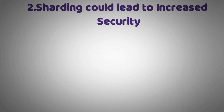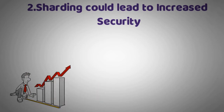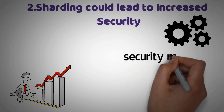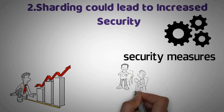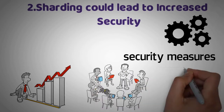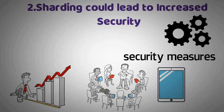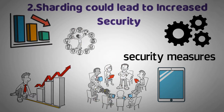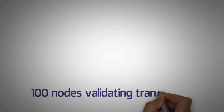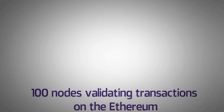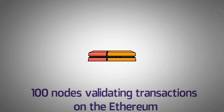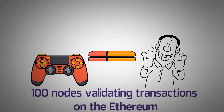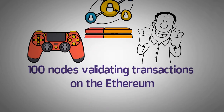Sharding could also lead to increased security on Ethereum. While it's true that sharding introduces some new risks, such as the risk of a shard being hijacked, these risks can be mitigated with proper security measures. In addition, by having multiple shards processing transactions in parallel, we can provide redundancy in case one shard goes offline. Additionally, shards would largely reduce the vulnerability of the Ethereum blockchain because the nodes that validate each shard are selected randomly. Imagine you have 100 nodes validating transactions on the Ethereum network and one of those nodes is hacked. With sharding, the hacker would only be able to control one shard out of the many that exist. This would greatly reduce the amount of damage that could be done and would make it much harder for a hacker to take over the entire network.